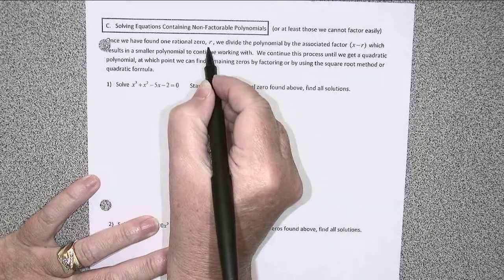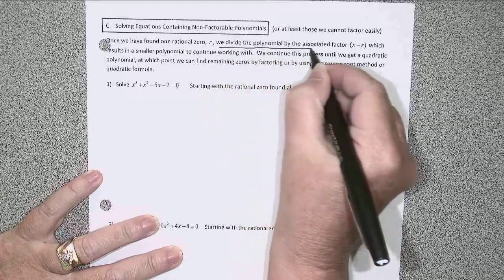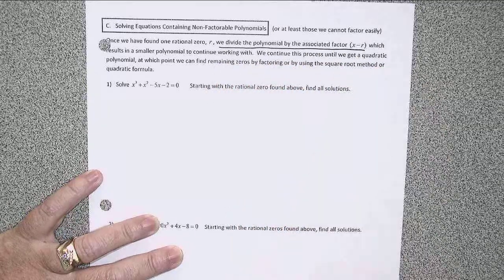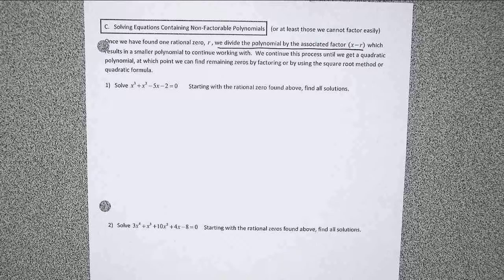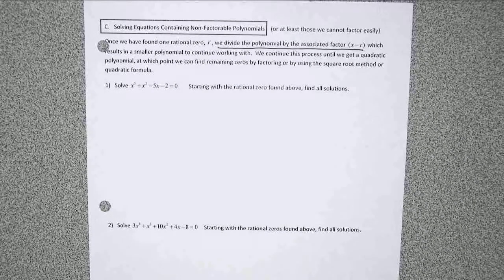The way to find more is to use a division process. Once we've found a rational zero r, we're going to divide our original polynomial by the associated factor x minus r. That will result in a smaller polynomial, a lower degree, that we can continue to work with.